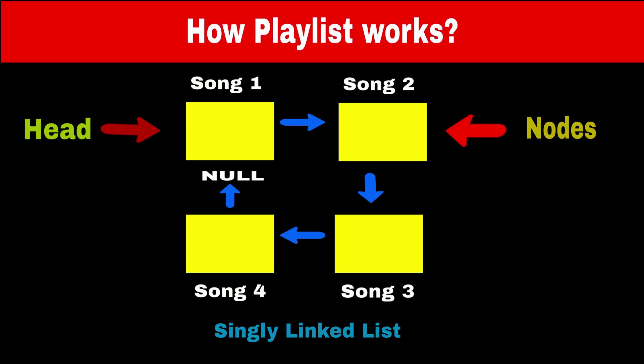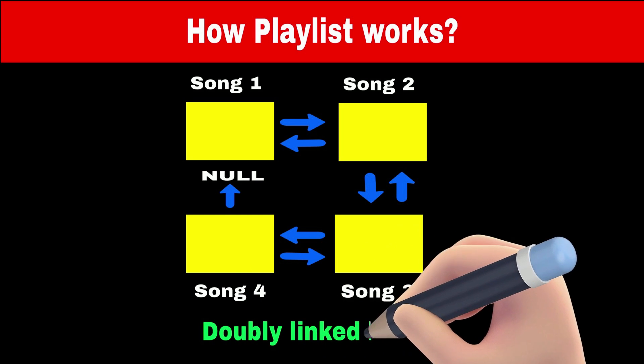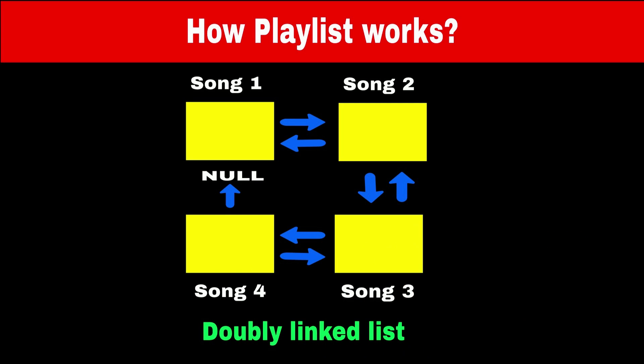So in the fourth node, along with storing the address of the next node, we will also store the address of the previous node. Now we can directly go from the fourth song to the third song. If we implement the same structure across all nodes, then we can play the second song after the third and so on. This data structure is a special type of linked list called a doubly linked list, because each node stores the value of both the previous node and the next node.